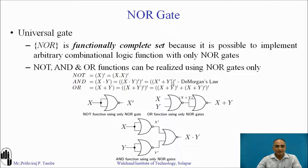If you visualize this, it is a NOR term with inputs x̄ + ȳ. Looking at the diagram, the first NOR gate acts as an inverter with input x and output x̄. Similarly, the second NOR gate acts as an inverter with input y and output ȳ. Now x̄ and ȳ are applied to a third NOR gate, giving output x · y at the output.